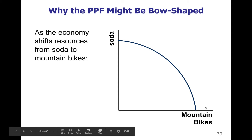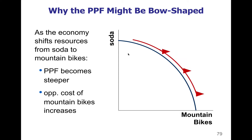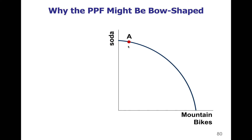In a bow-shaped production possibility frontier, let's say we are producing a lot of soda up at the top of the graph. As we move away from soda and into mountain bikes, the PPF becomes steeper. And as we get into the steeper part of the curve that's closer to vertical, that means the opportunity cost of mountain bikes is going to increase. Let's say we're producing at point A — at A, we're making a ton of soda.